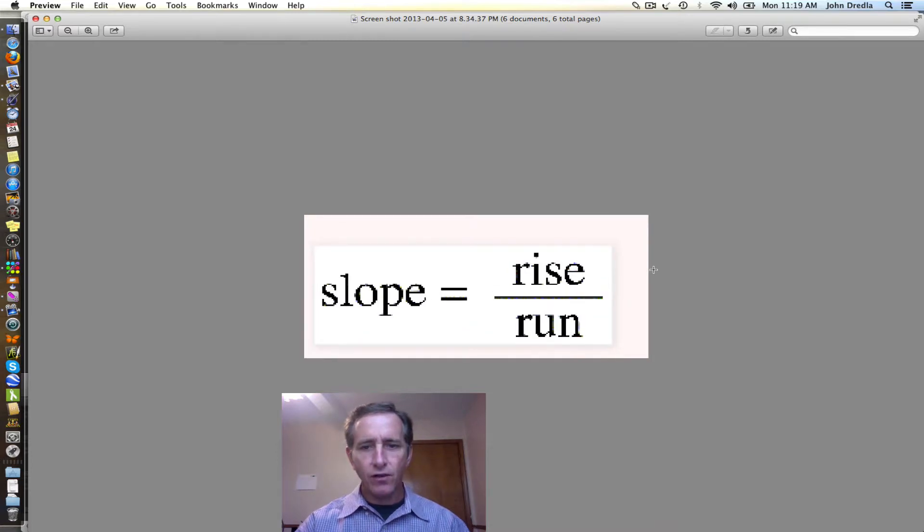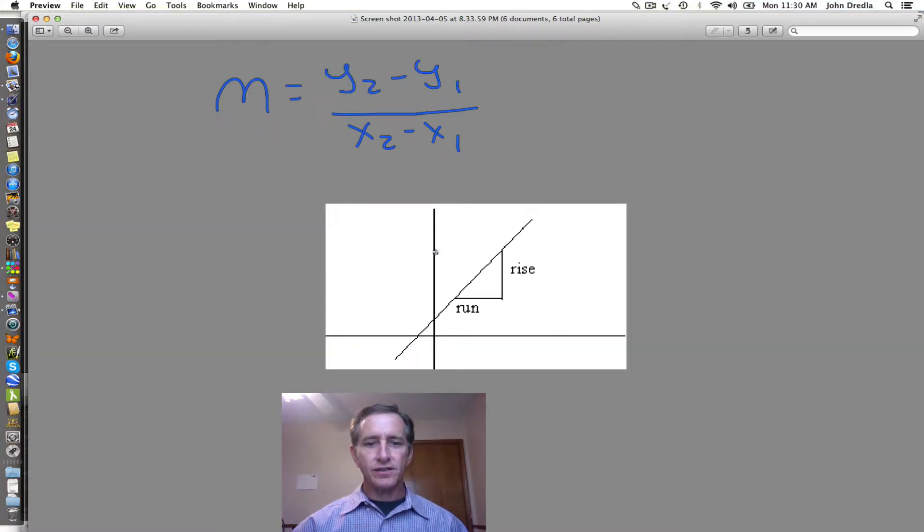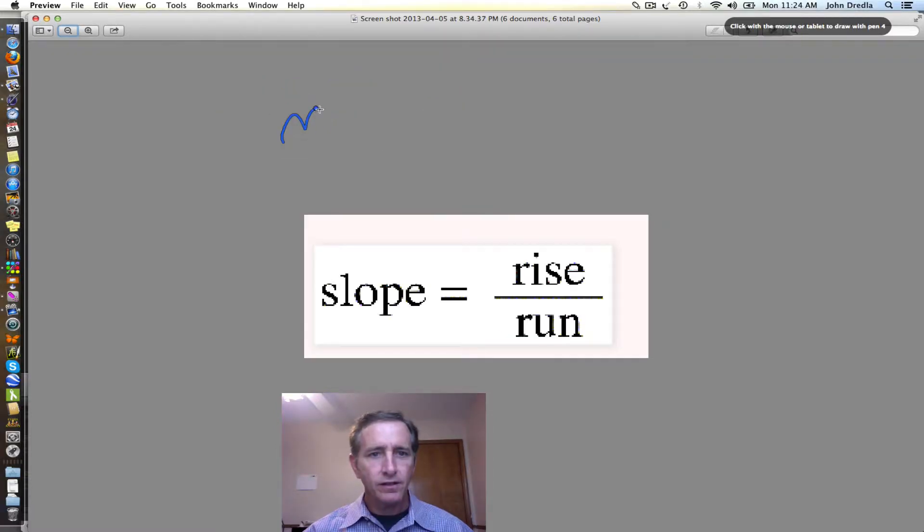The slope is the rise over the run, and in the standard equation of a line it's given by the m. The rise is the difference in y values and the run is the difference in x values. Slope is determined by the difference in y values divided by the difference in x values.